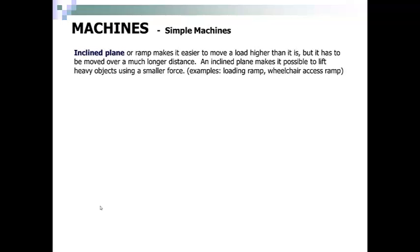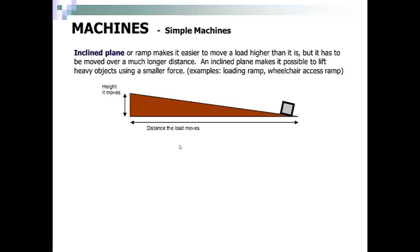An inclined plane or a ramp makes it easier to move a load higher than it is, but it has to be moved over a much longer distance. An inclined plane makes it possible to lift heavy objects using a smaller force. Examples of this are loading ramps and wheelchair access ramps. So here is the inclined plane. Here's the distance that you move the object. Here's the height that it moves. And you'll notice that this hypotenuse of this triangle here is a lot longer than the distance.